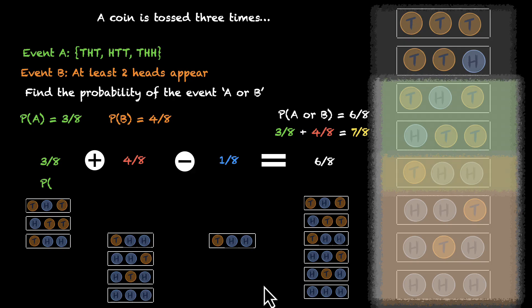To generalize this, we can say that the probability of A plus probability of B minus probability of A intersection B, whatever is common, should give us the probability of A union B.